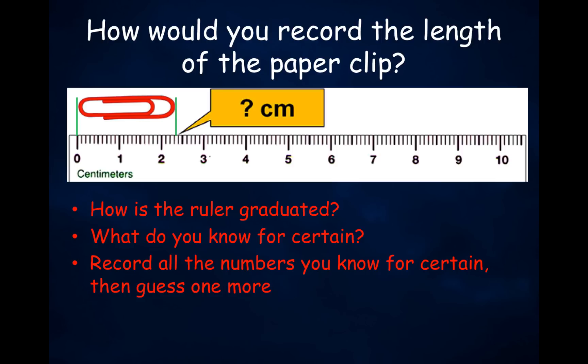Now, how would you record the length of the paper clip using this second ruler? Consider how this ruler is graduated and what you know for certain. Record all numbers you know for certain — that the paper clip is somewhere between 2.3 and 2.4 — then guess one more number. 2.33, 2.32, or 2.34 centimeters would all be appropriate measurements for the length of this paper clip using this particular ruler.